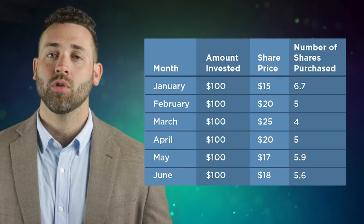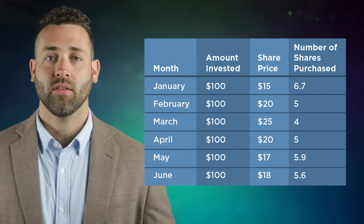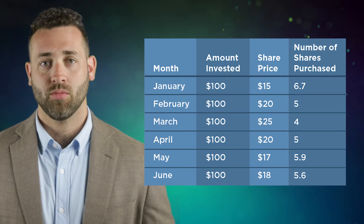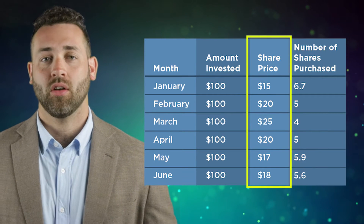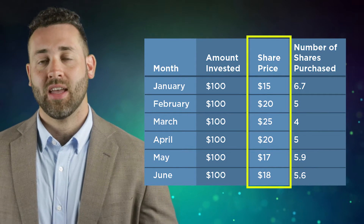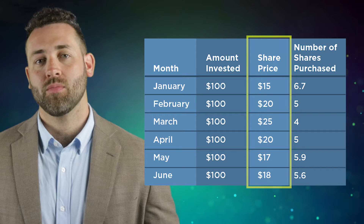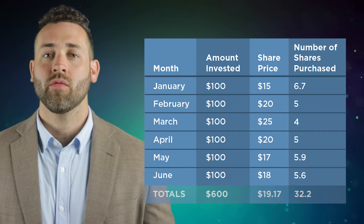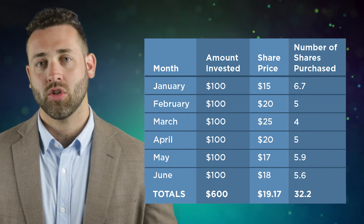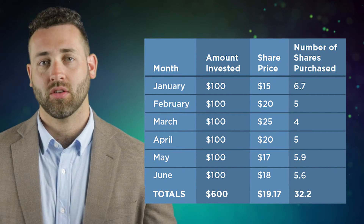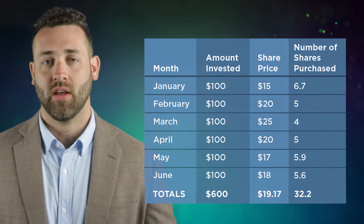Let's look at a simple hypothetical example. Let's say you invest $100 per month for six months in Mutual Fund A. The price of Mutual Fund A bounces up and down each month, as shown in the share price column. At the end of that six-month period, you've invested $600 and own 32.2 shares of Mutual Fund A.